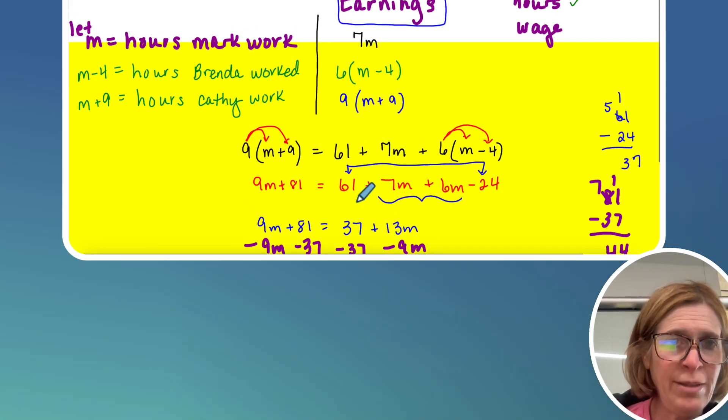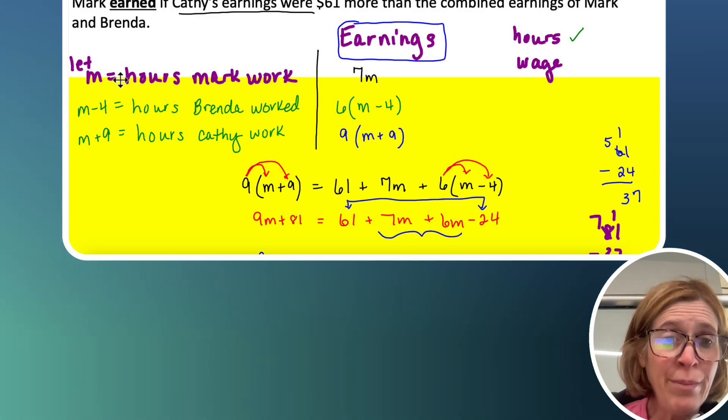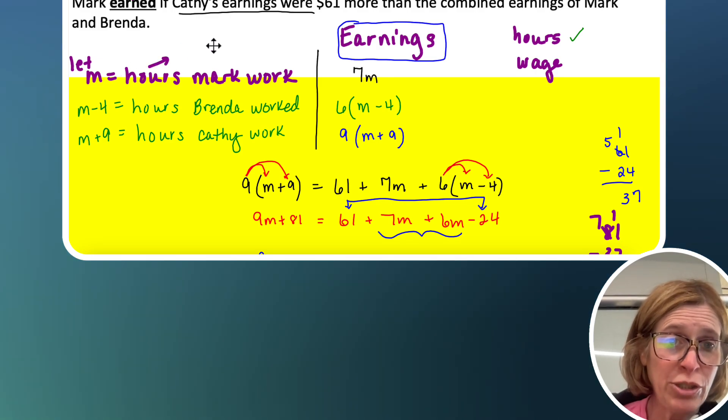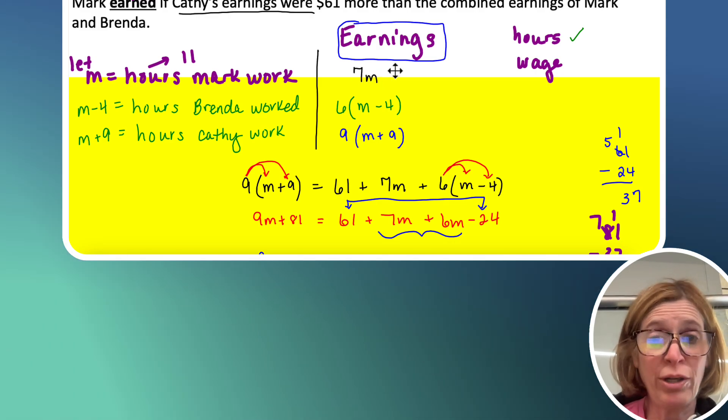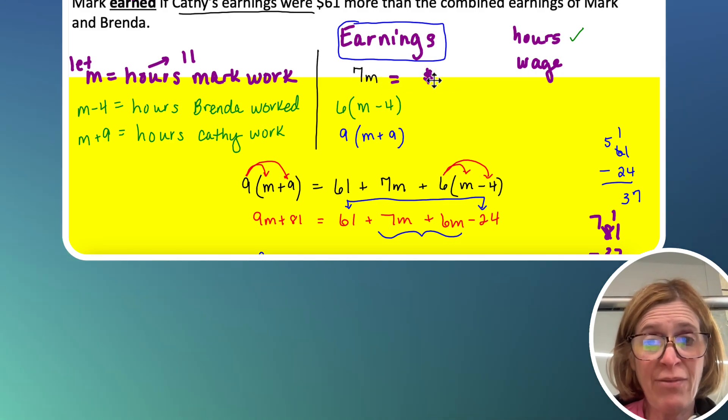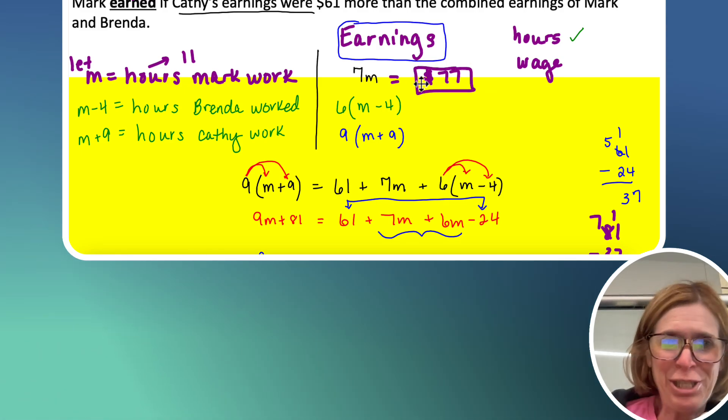Okay, so now I go back to the original question. Find out how much Mark earned. Well, M is the hours Mark worked. So Mark worked 11 hours. He earns $7 per hour, which would be $77. And that's how much Mark earned.